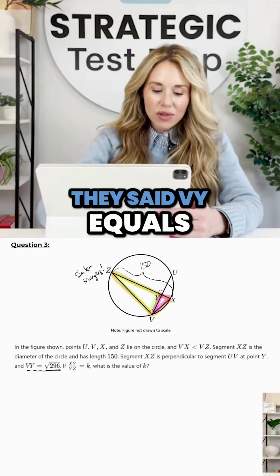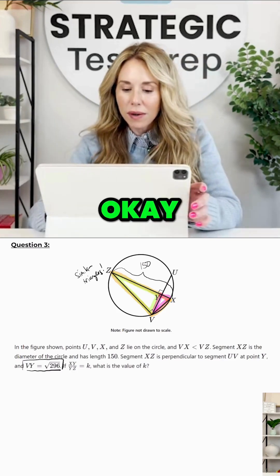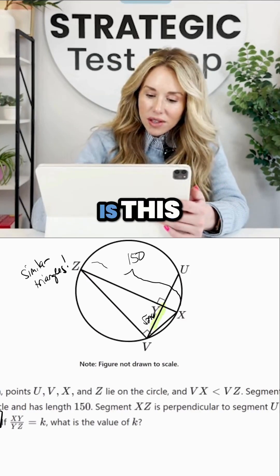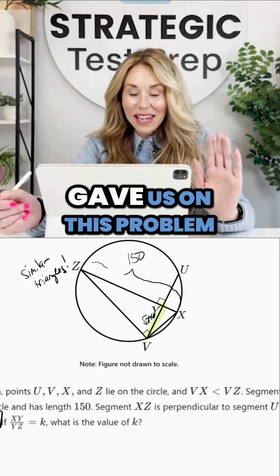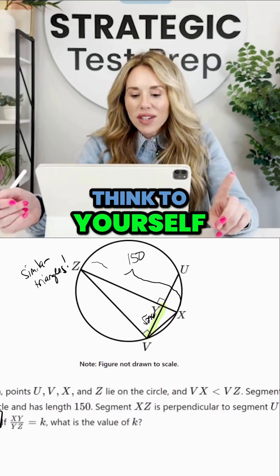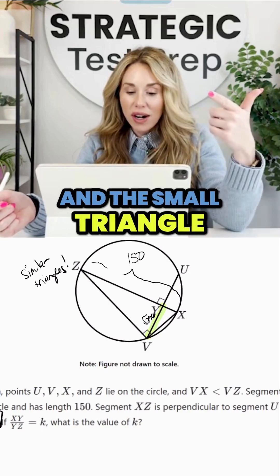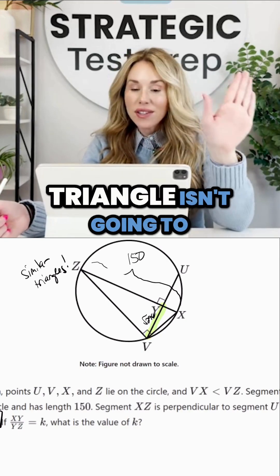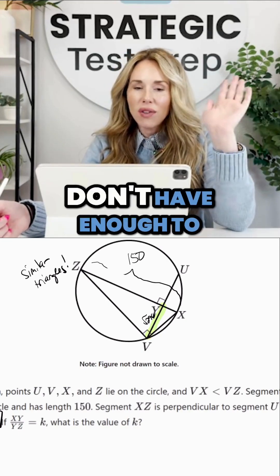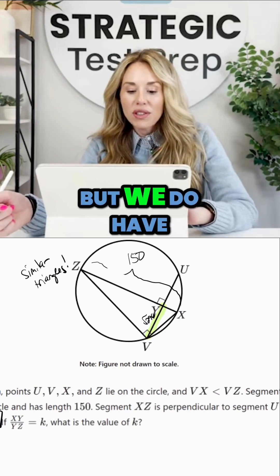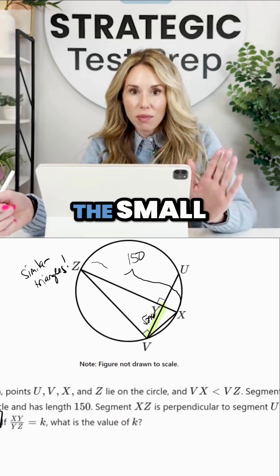Here's the key. They said VY equals the square root of 296. Okay, 296 is this side right there. That is the only side length that they gave us on this problem. And you have to think to yourself, what two triangles share that side? It's the medium triangle and the small triangle. So using the big triangle isn't going to help you because we don't have enough to go off of with the big triangle, but we do have a side that's shared between the medium and the small.